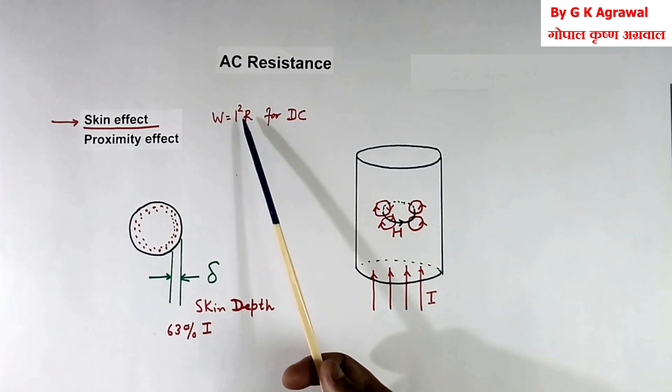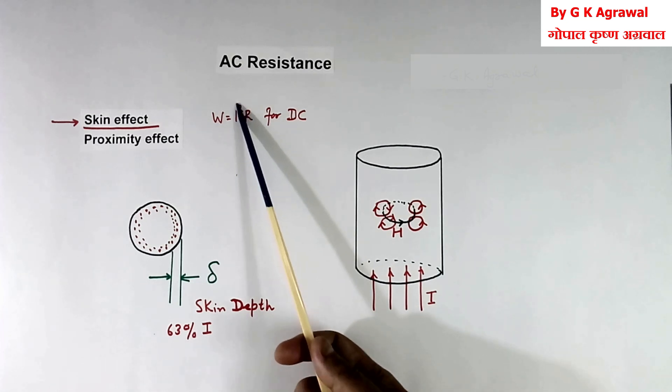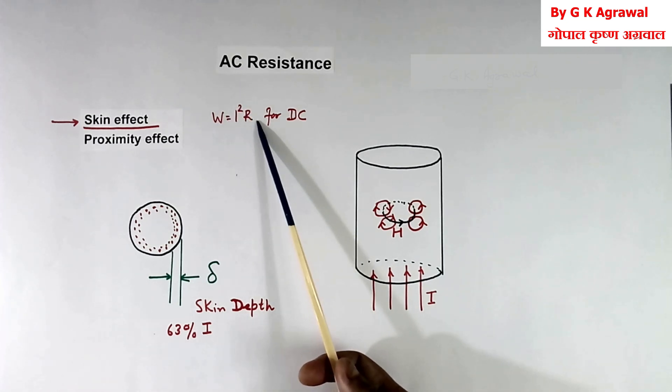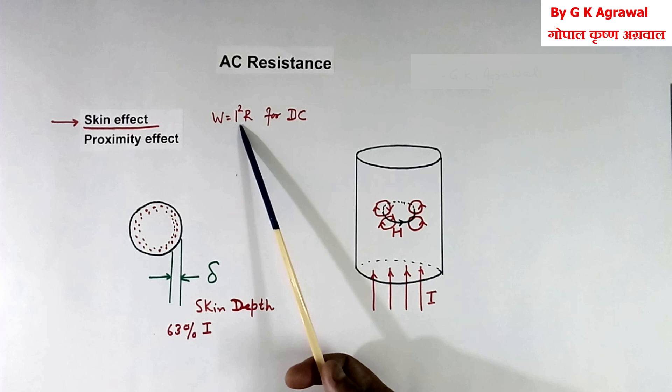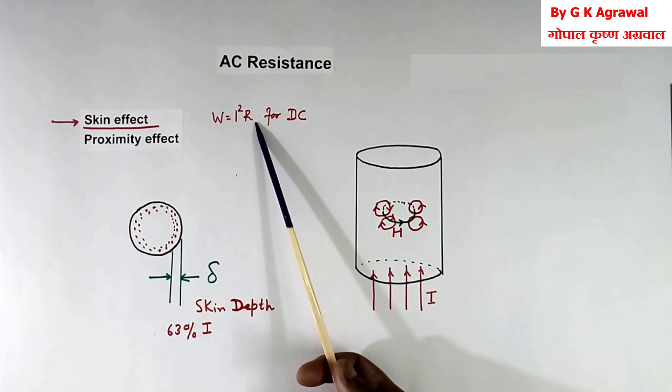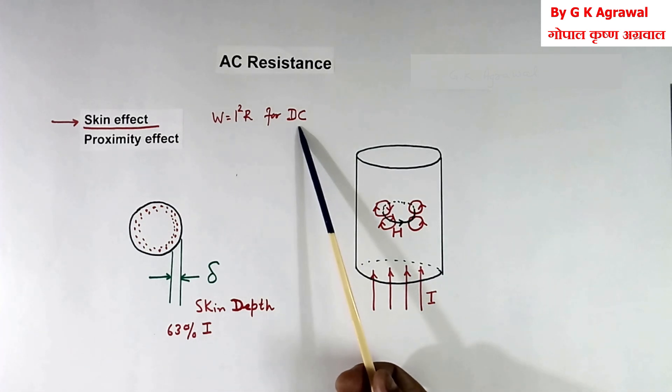We know when current flows in a wire with the resistance R, then power loss will be I square R. But that is applicable for DC.